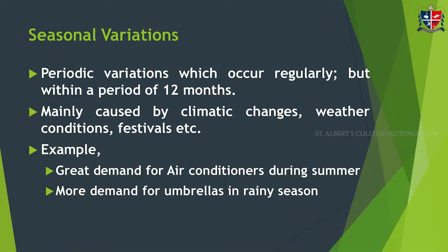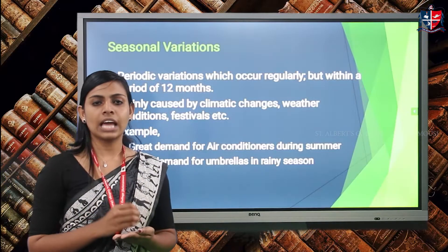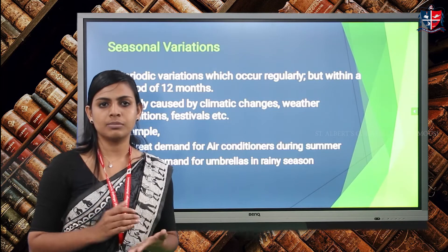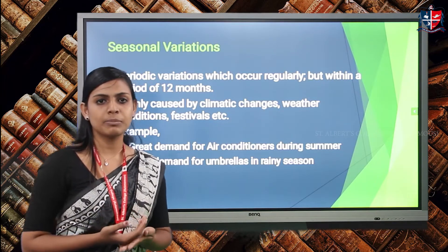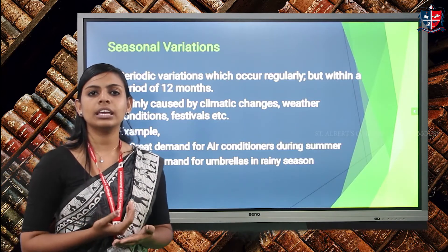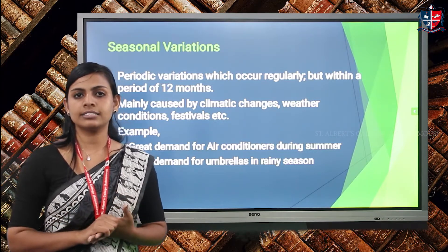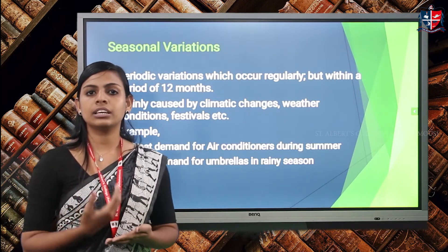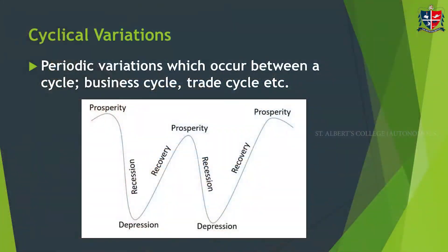The next component is seasonal variations. Seasonal variations are periodic variations that happen within a period of one year or within 12 months. For example, during the rainy season there will be higher demand for umbrellas, and during summer season there will be higher demand for air conditioners. Such demand changes come under seasonal variations — demand will increase or decrease according to the seasons.